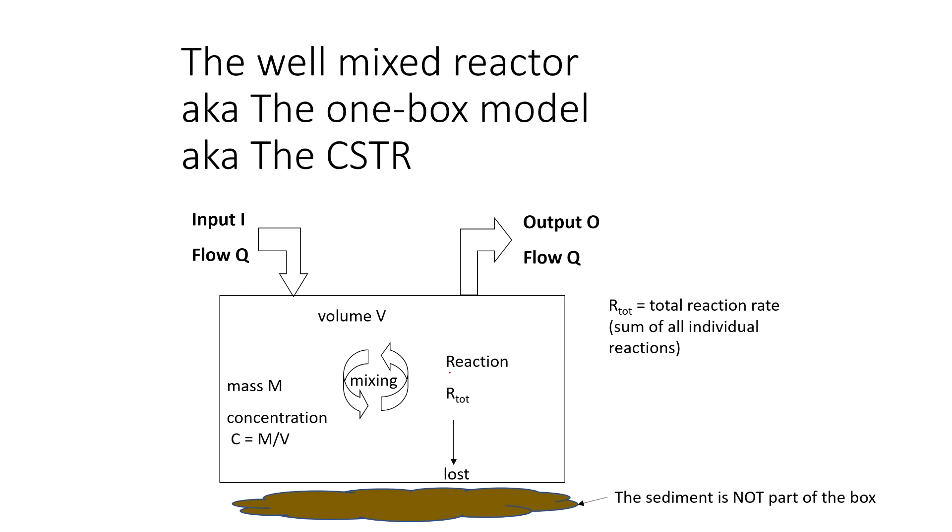So you assume that this is well-mixed, which means that the concentration is the same everywhere. And then you have mass going in, mass going out, and then you have reactions. And you might think about R_total, which is the sum of all reaction rates, all reactions that's removing your chemical from the system. And the key thing to remember is that typically when we do this and we draw our box, the lower boundary of the box is the sediment water interface. The sediment is not part of the box. So when our chemical settles out of the water column and enters the sediment bed, it is now removed from the box.